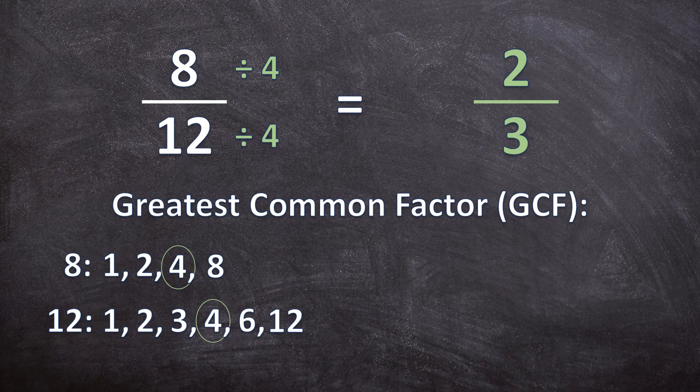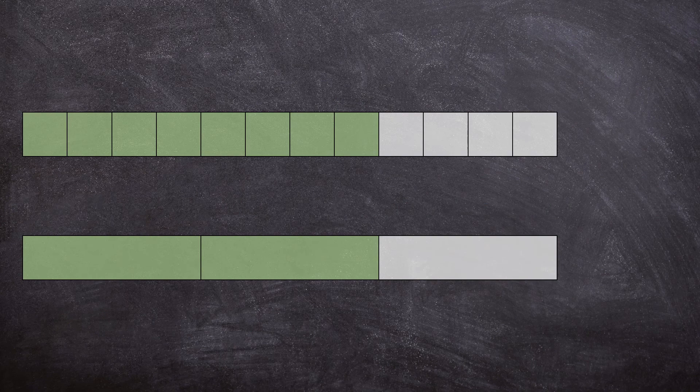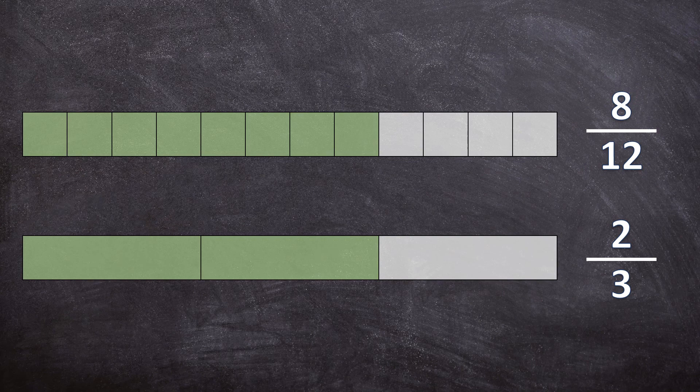So let's visualize this for ourselves. Here we have the eight over 12, and here we have the simplified fraction two over three. Can you see that they are exactly the same? The colored in parts — the green parts — are equal and the white parts are also equal. They are exactly the same. They are equivalent fractions.